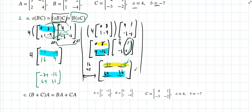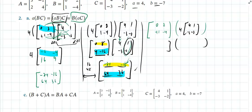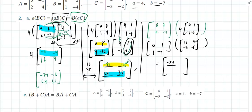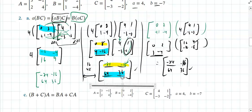We can also verify B(AC) = the same result. Compute AC = [16, −12; 4, −8] — that's 4 times C. Then multiply B times AC: first row gives [0−24, 0−16] = [−24, −16]; second row gives [16+48, 4+32] = [64, 36]. All conditions are satisfied.